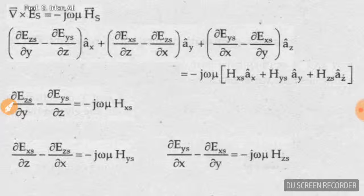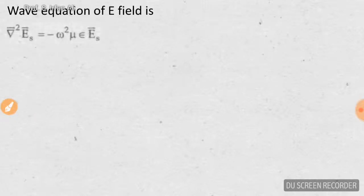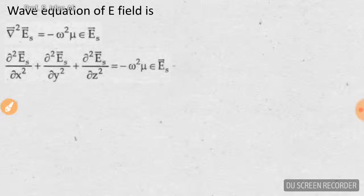The second-order wave equation for the E field is: nabla-squared Es equals minus omega-squared mu epsilon Es. This del-squared (nabla-squared) is a second-order differential operator and is called the wave equation. We can write this as del²/dx² Exs plus del²/dy² Eys plus del²/dz² Ezs equals minus omega-squared mu epsilon Es.